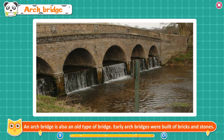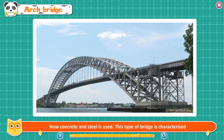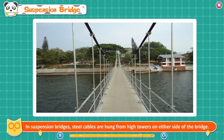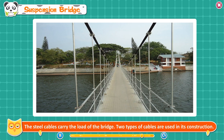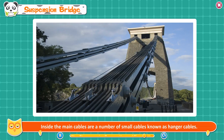Arch Bridge — an arch bridge is also an old type of bridge. Early arch bridges were built of bricks and stones; now concrete and steel is used. This type of bridge is characterized by a semi-circular structure. Arch bridges are stronger than beam bridges. Suspension Bridge — in suspension bridges, steel cables are hung from high towers on either side of the bridge. The steel cables carry the load of the bridge. Two types of cables are used: main cables which hang from the towers, and hanger cables which are smaller cables inside the main cables.